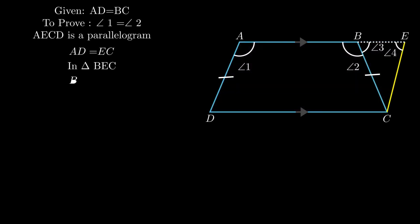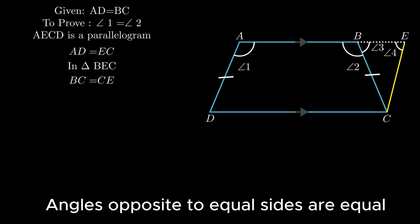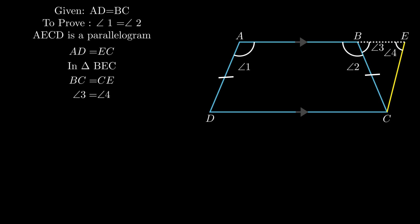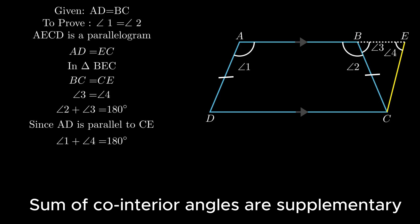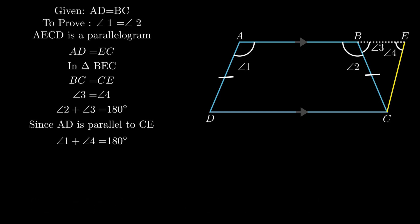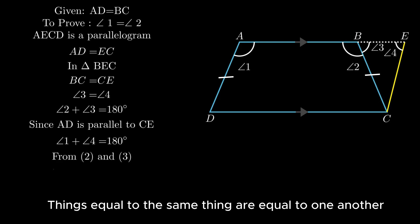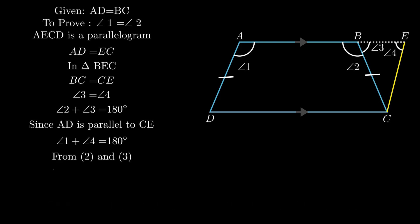Now in triangle BEC, since BC = CE (as AD = BC given and AD = EC proved), by the theorem that angles opposite to equal sides are equal, angle 3 = angle 4. As adjacent angles on a straight line form a linear pair, the sum of angle 2 and angle 3 = 180 degrees. Since AD is parallel to CE, the sum of angle BAD and angle BEC = 180 degrees as co-interior angles are supplementary. From these two equations, angle 2 + angle 3 = angle 1 + angle 4.